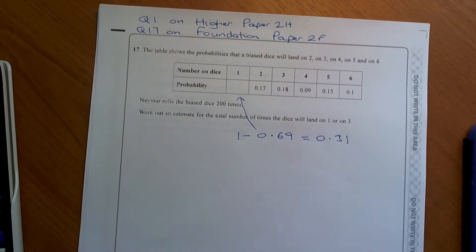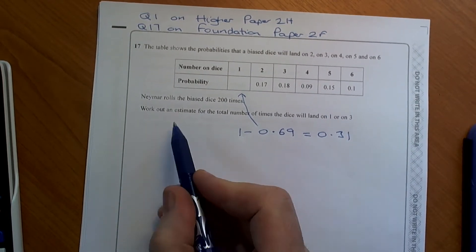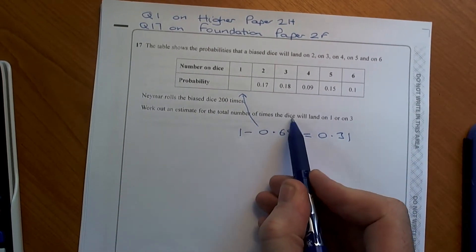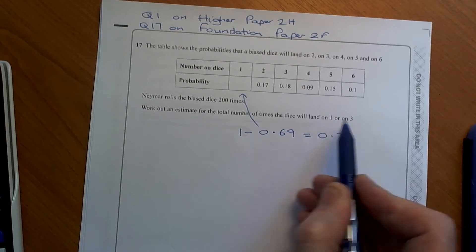Now we're not quite finished at that point, because we need to work out an estimate for the number of times the dice will land on a 1 or a 3.